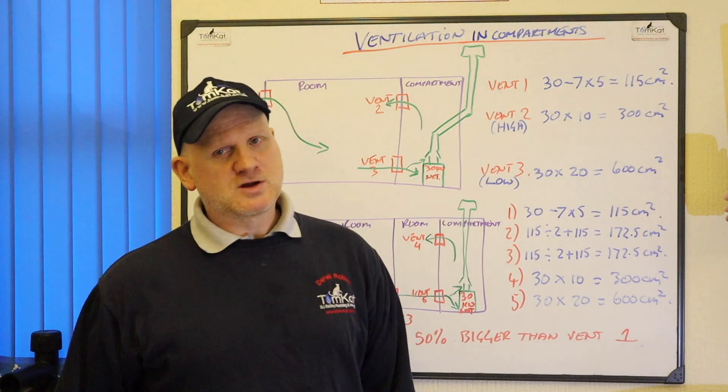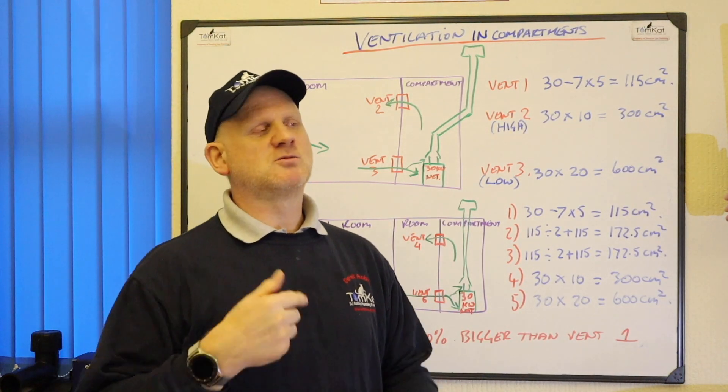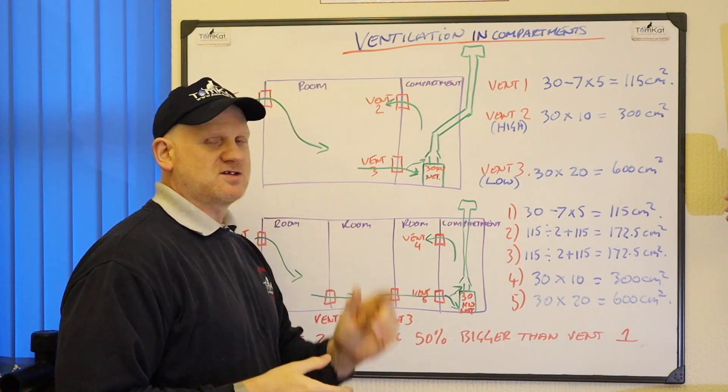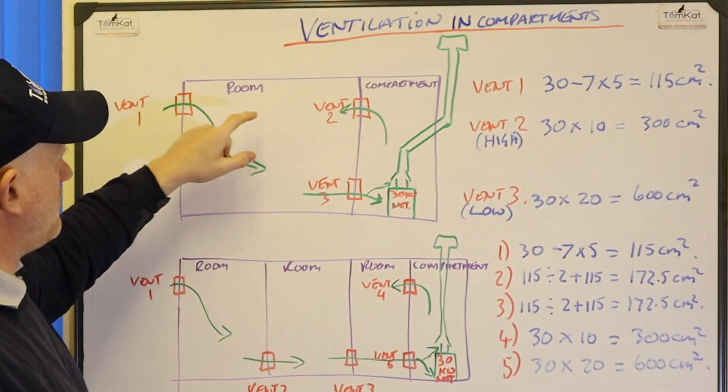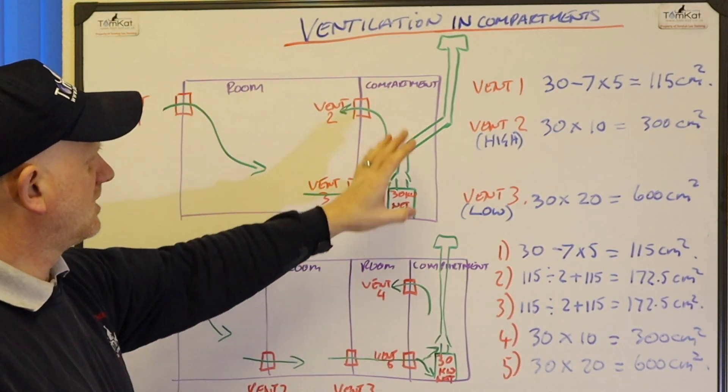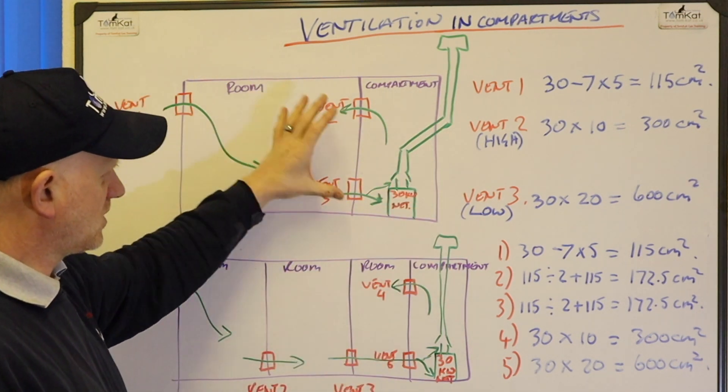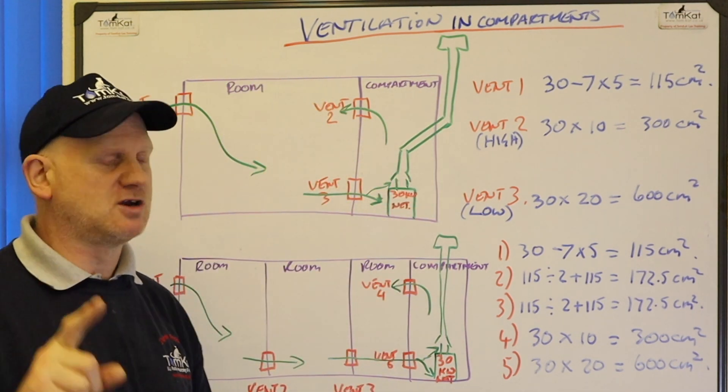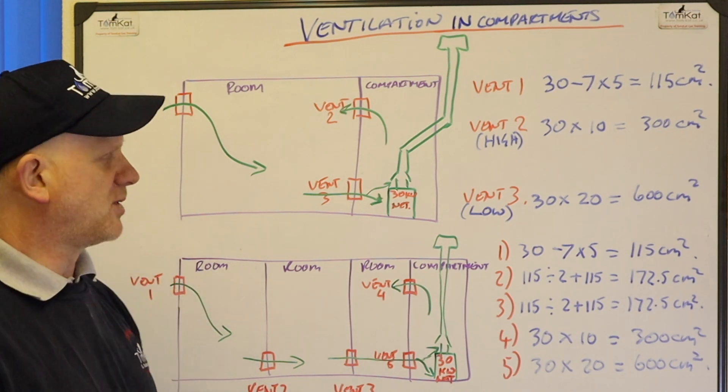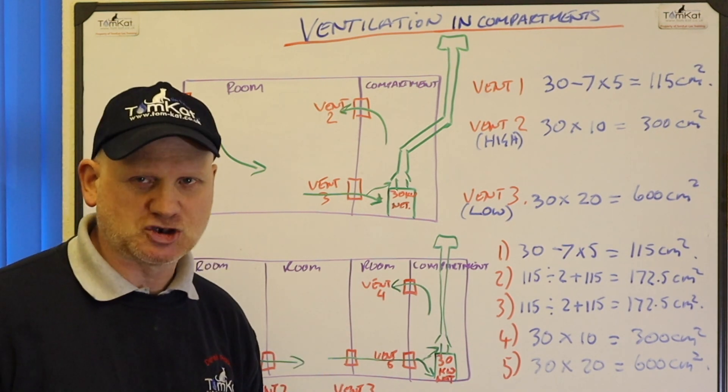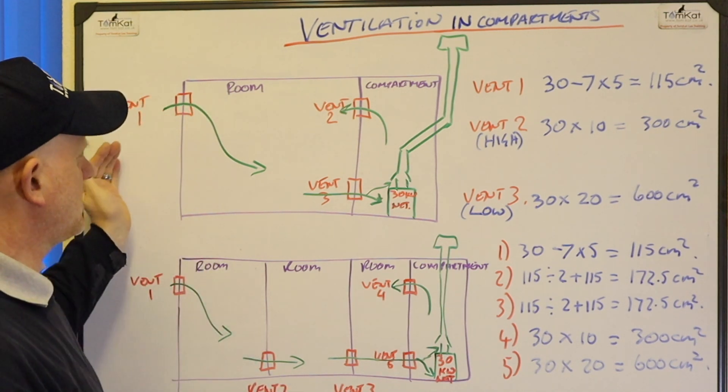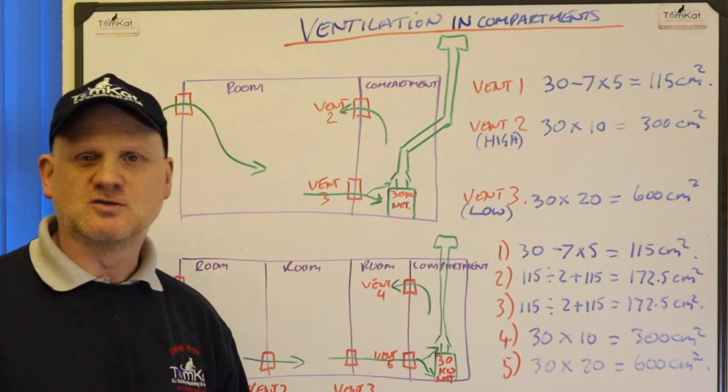So let's have a look at this compartment ventilation and we'll continue with open flue appliances. So we've got this scenario first, we've got a room and the compartment, we've got this open flue boiler installed in the compartment but we're taking our ventilation from the room. So because it's an open flue appliance it needs air for combustion, so we'll need a vent from outside to bring the fresh air into the room.